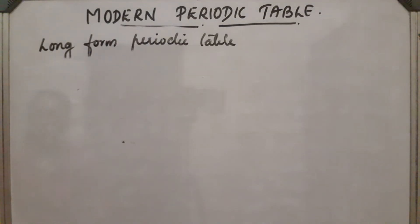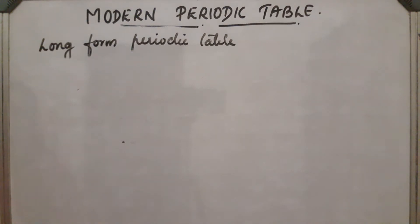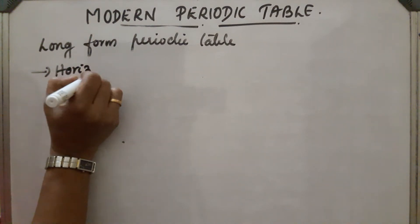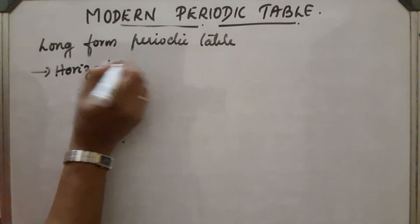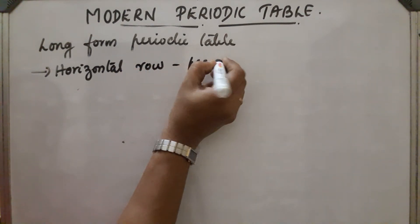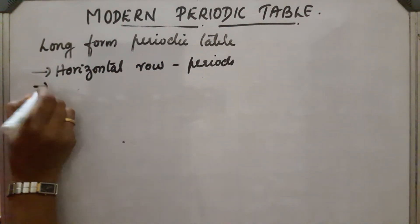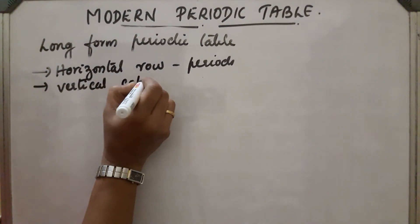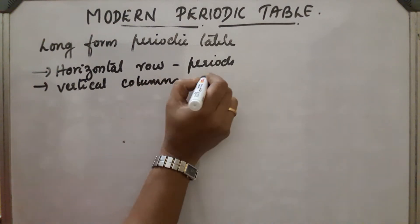Next, let's explain the long form periodic table. It is based on the modern periodic law, and the elements are arranged in the increasing order of atomic number. The horizontal rows present in the table are called periods, and the vertical columns are called groups.